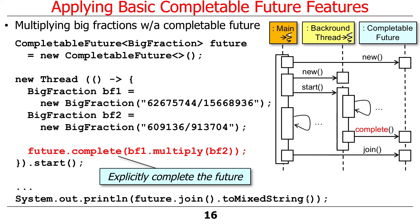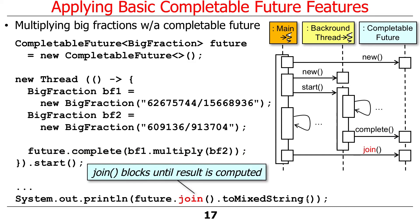And then when we're done, we explicitly complete the future. So we say, you know, multiply this result and store it into the future. So the future is now complete. And what that means is that the call to join here will now return instead of blocking, because its result is done.